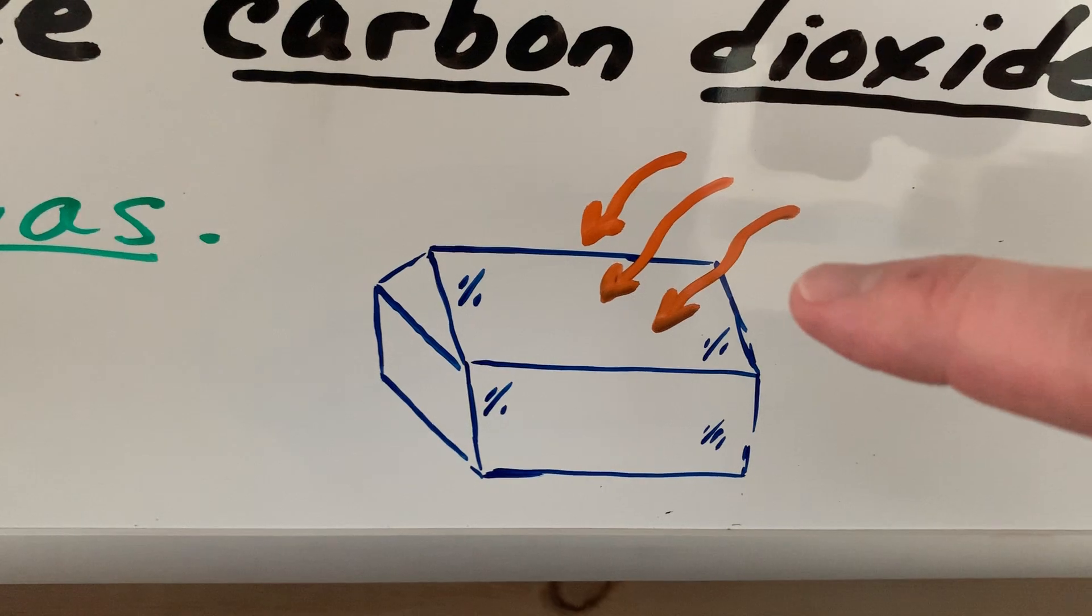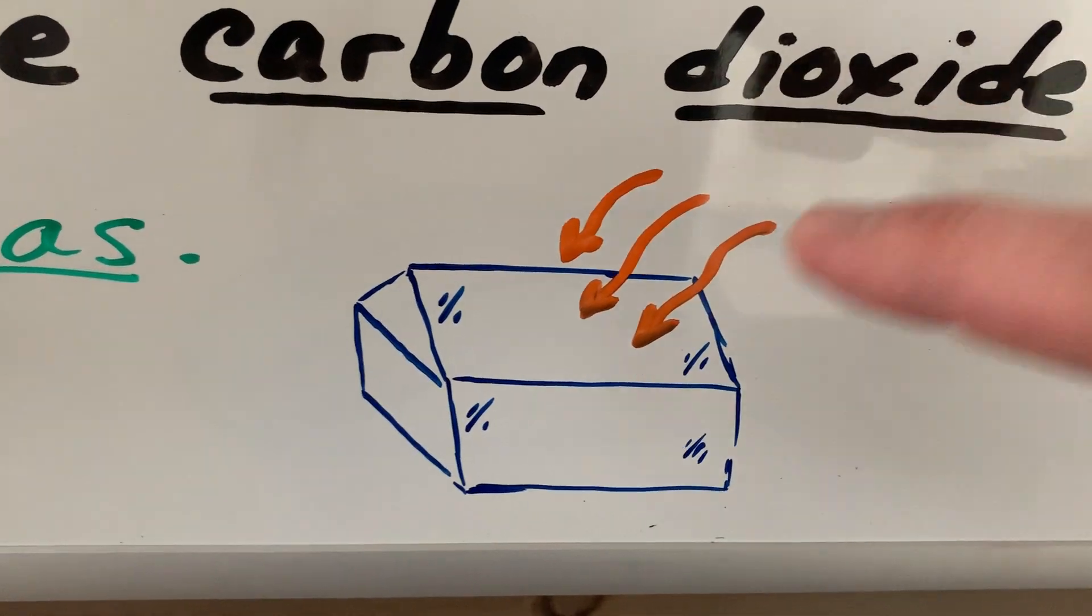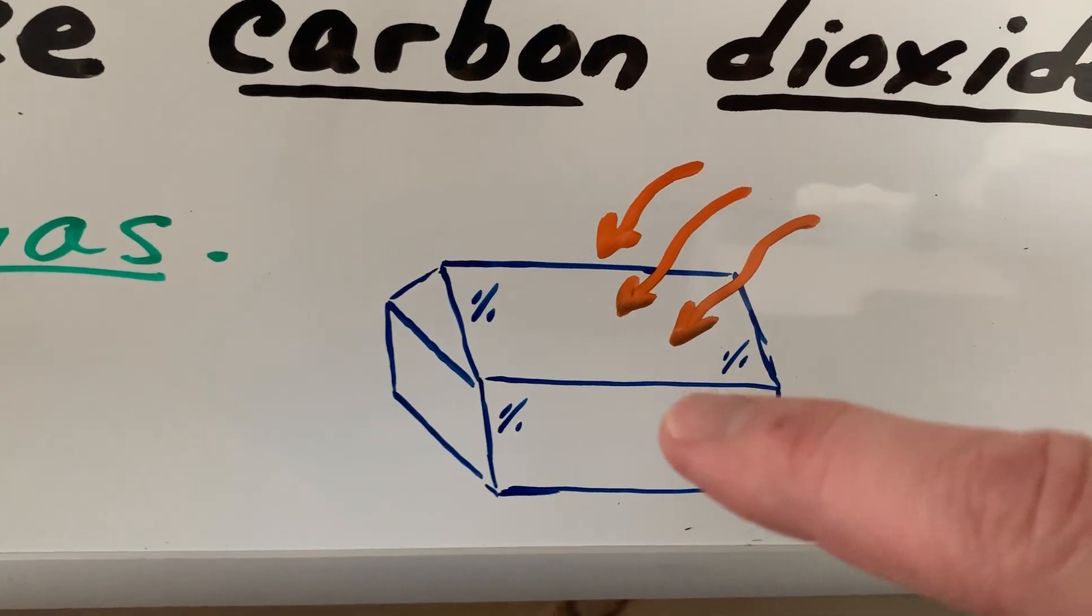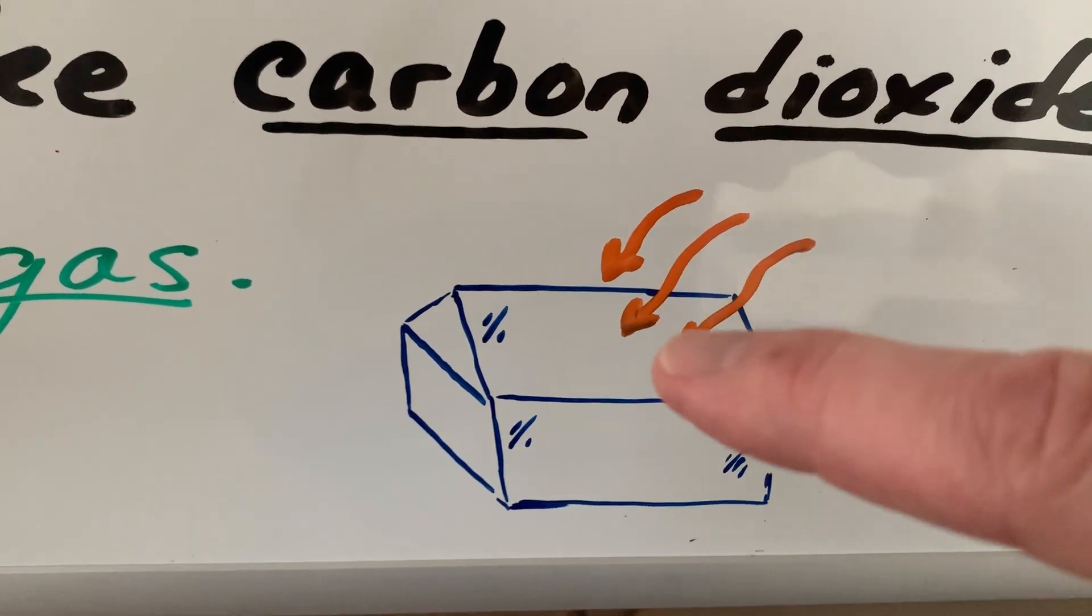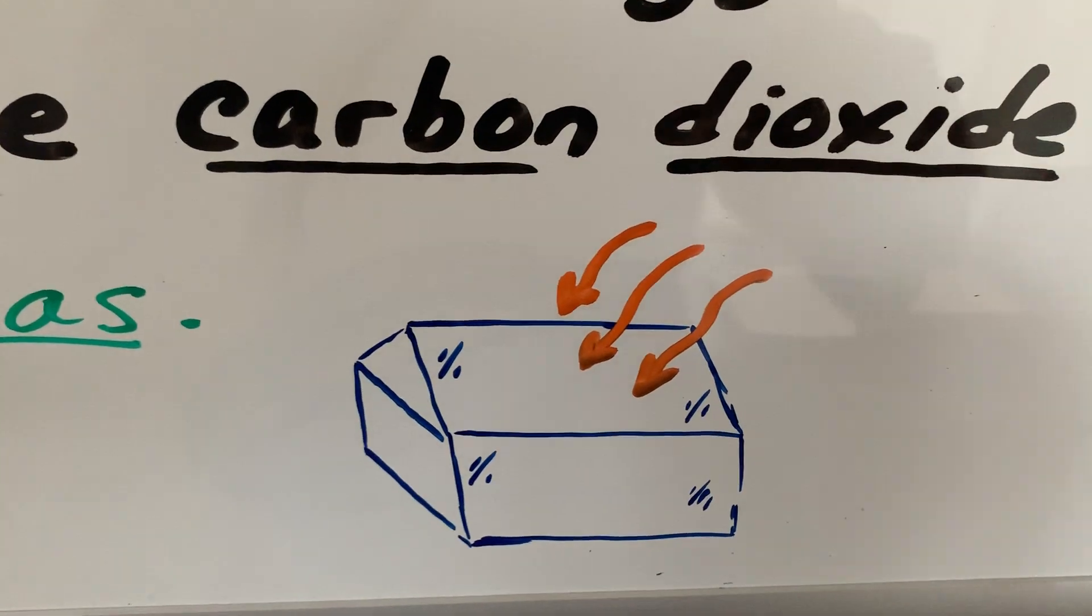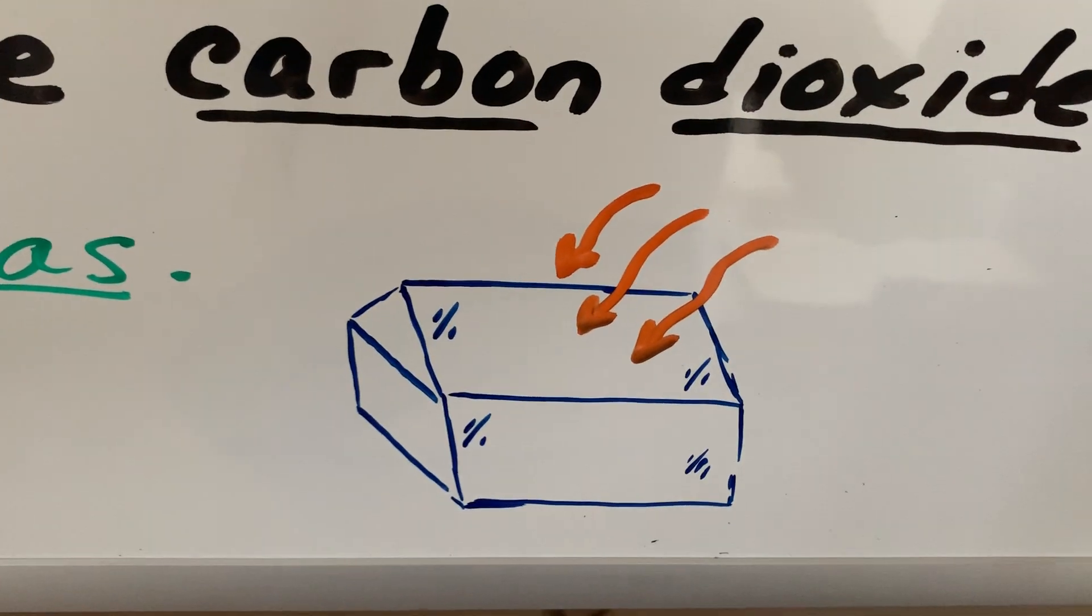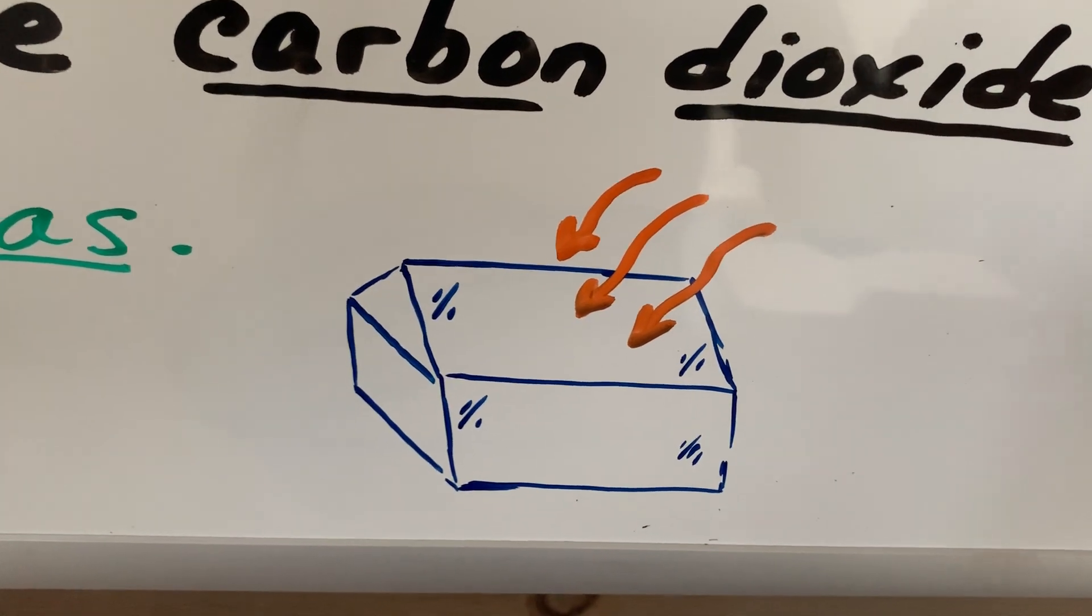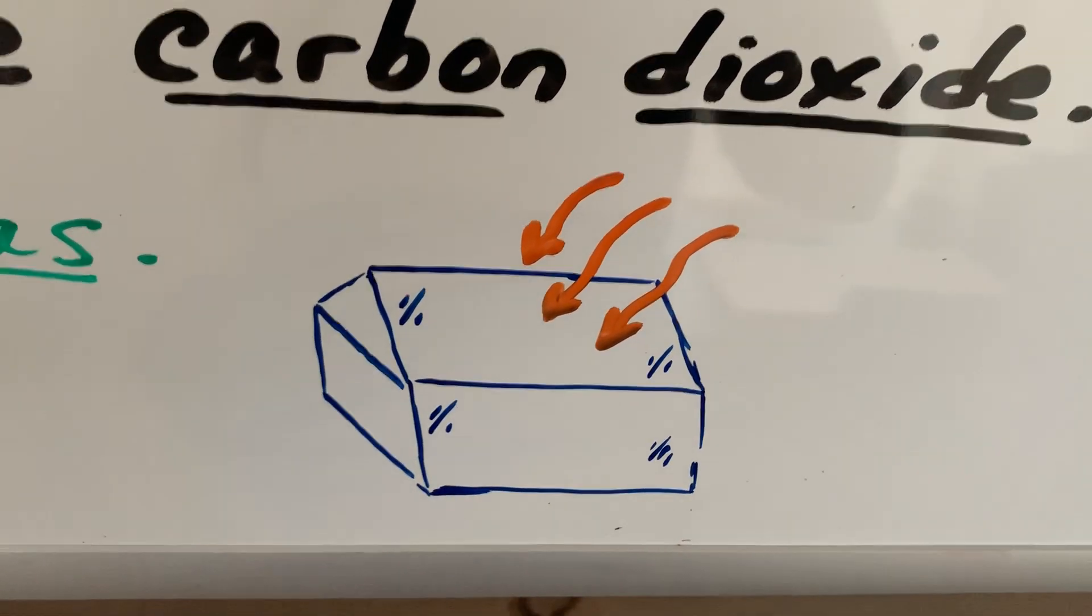But the neat thing about a greenhouse is while the sunlight passes in and helps to warm up the inside of this building, the glass will slow down any escaping of heat. So greenhouses are actually very common in some of your more northern latitudes where you have to deal with the cold season of winter.